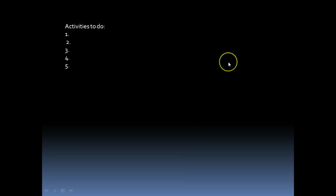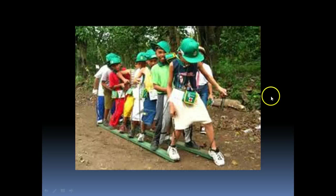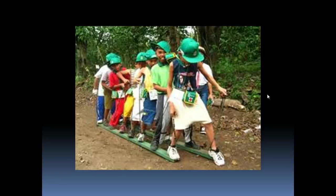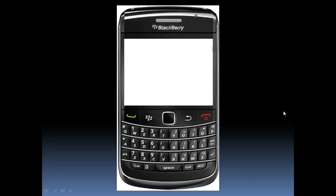For the activities slide, narrate: 'These are the activities you have to do — first, follow instructions; number two, design an activity; number three, give it a chance,' and so on. Then move to the next slide and describe the image: 'As you can see, this is a photograph of students doing collaborative work — they must reach a specific point, so they need to work together.'